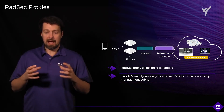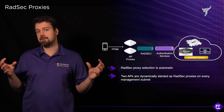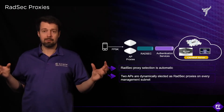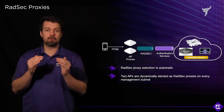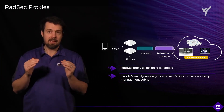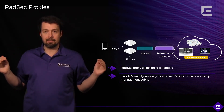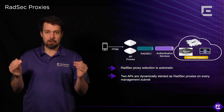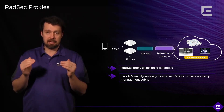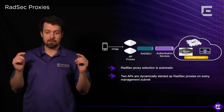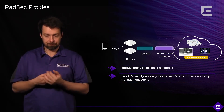Non-RATSEC proxy access points simply point to those two devices. Instead of communicating directly with the cloud, they send any authentication request to the RATSEC proxies instead.